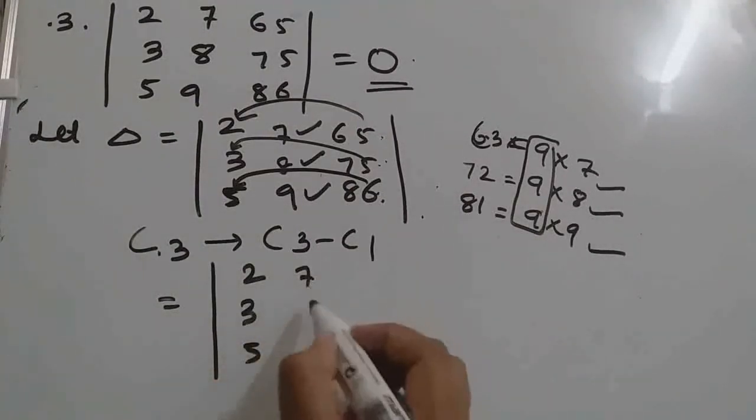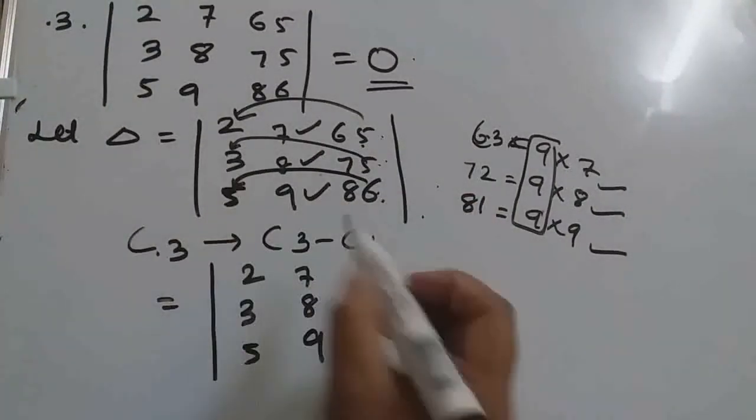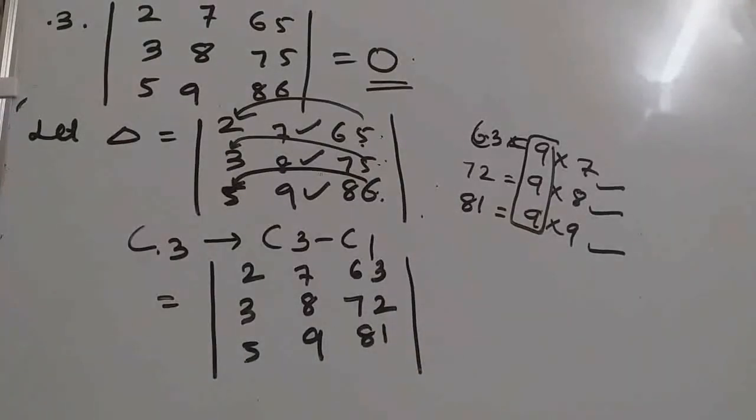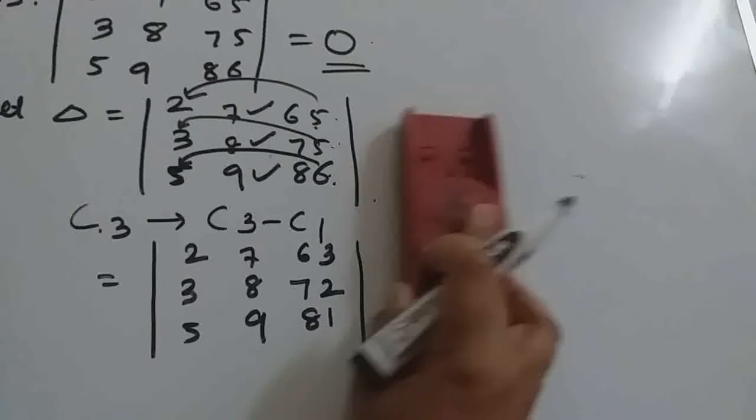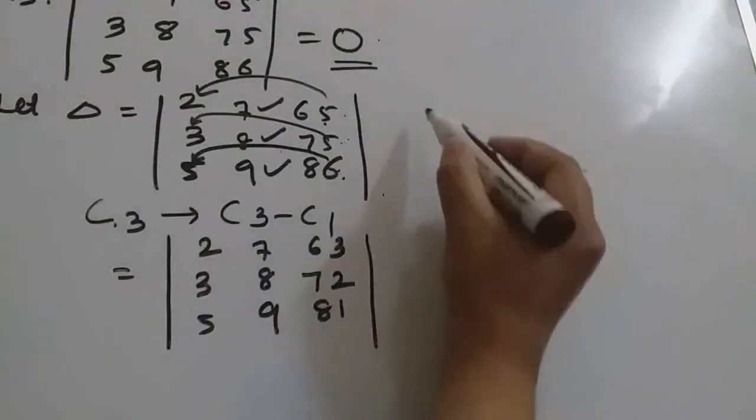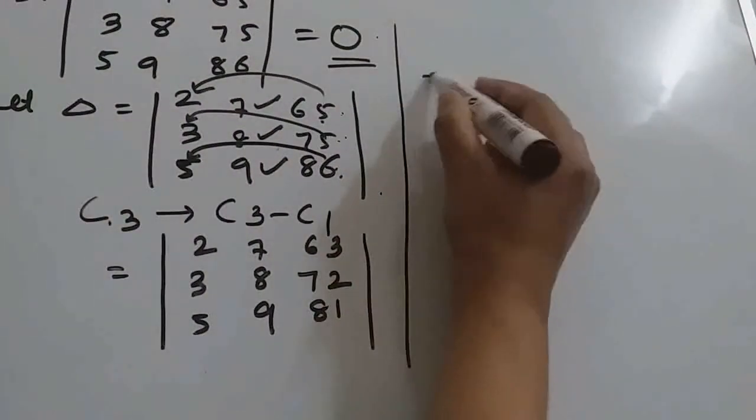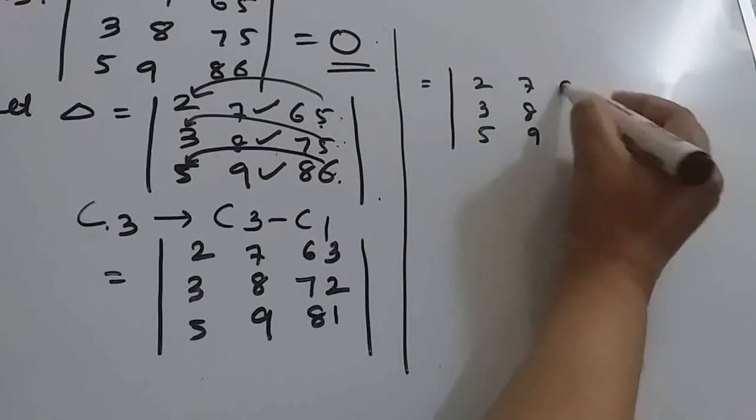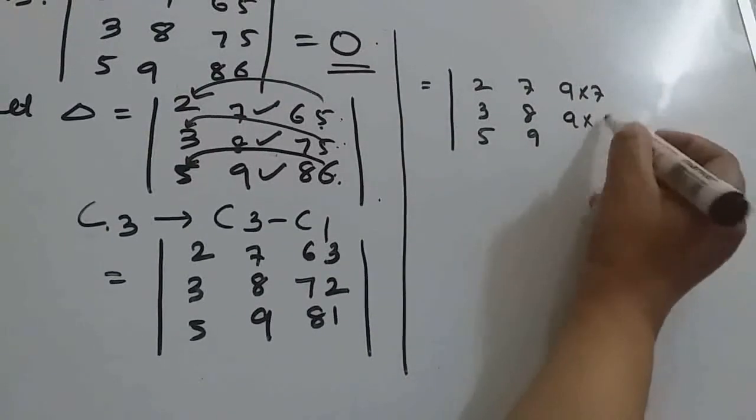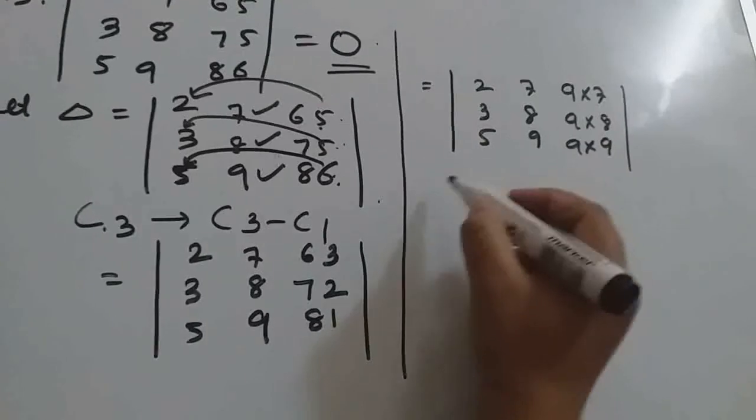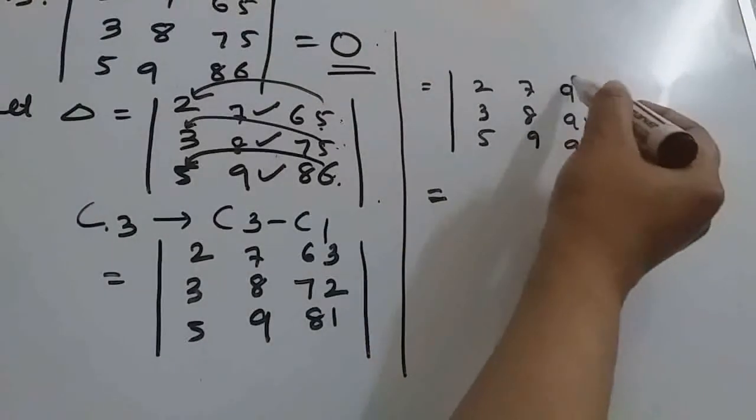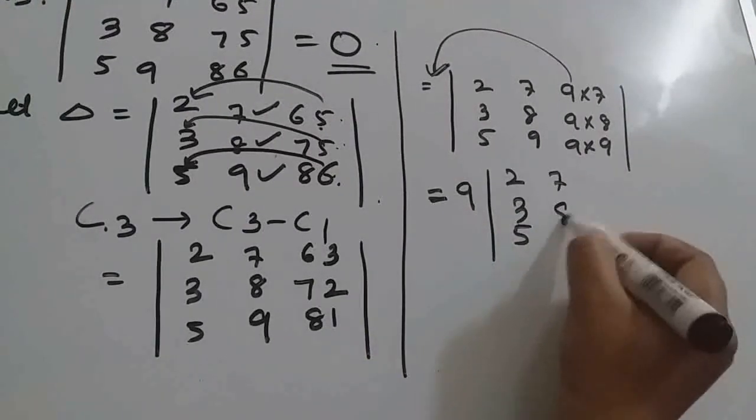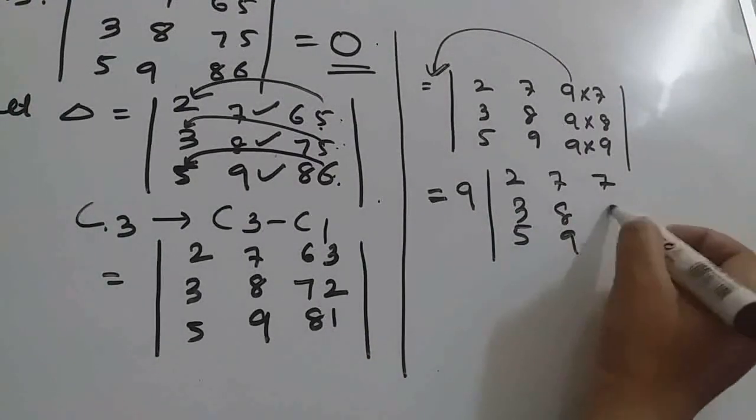So what we will get here? C1 and C2 will remain same: 65 minus 2, 63, 72, and 81. After this what we will do? We will write 63 as 9 into 7, 9 into 8, 9 into 9. Then this 9 we can take common. This is also one of the property. So you will be left with 7, 8, and 9.